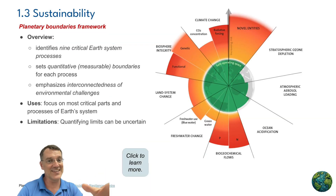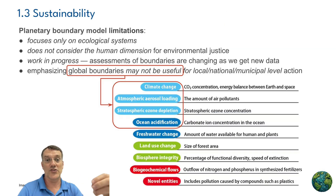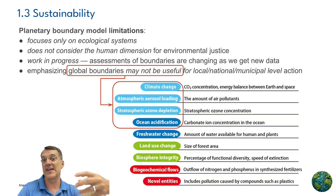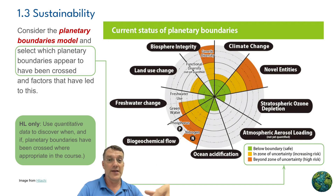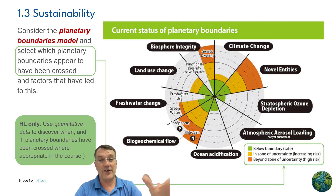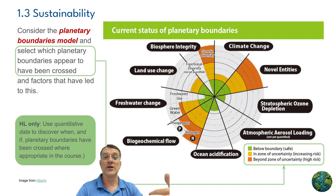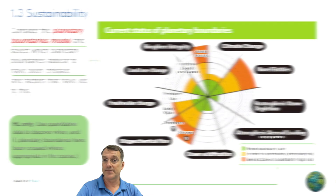However, quantifying precise limits can be uncertain, and it doesn't consider the social aspects of sustainability — it's really focused on the ecological aspects. The Planetary Boundaries Framework, while emphasizing ecological aspects without factoring in social aspects, feeds into the donut economics model.